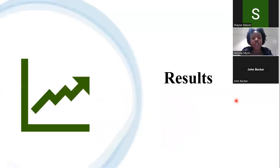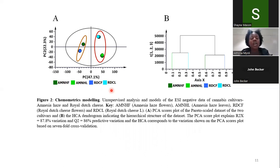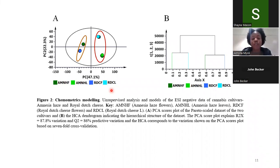In this study, we studied two cannabis cultivars: the leaves and flowers of Amnesia Haze and the leaves and flowers of Royal Dutch Cheese. The chemometric models produced from the LC-MS data showed cultivar-to-cultivar metabolite differences, as well as plant tissue-to-plant tissue metabolite differences. This means the two cultivars were chemically different from each other, and the chemical differences were attributed to the metabolite profiles of the leaves and the flowers. To better understand these differences, we performed metabolite annotation.